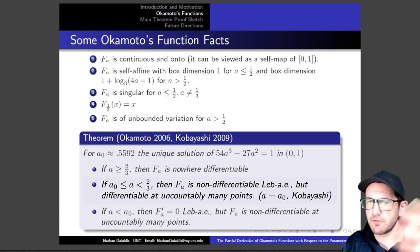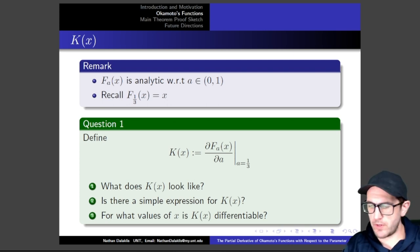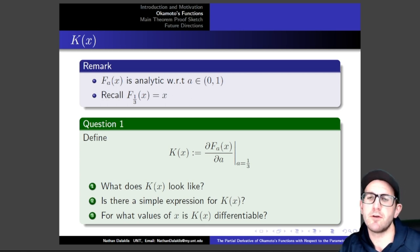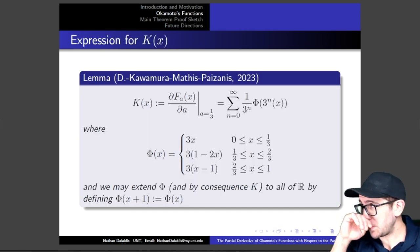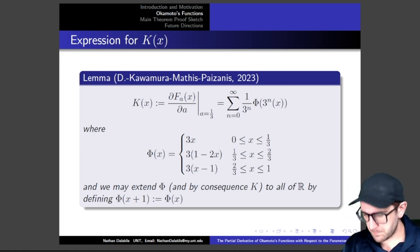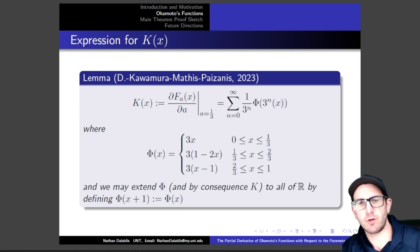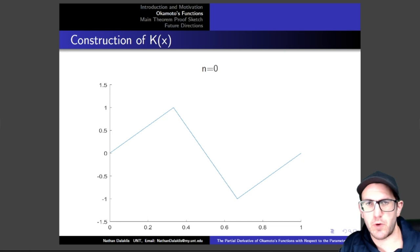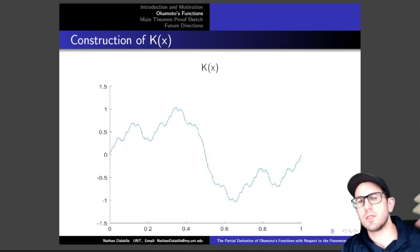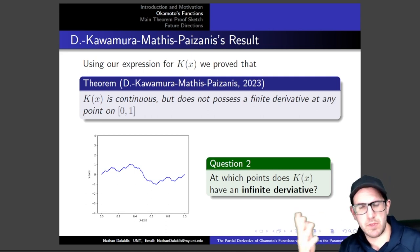We can make an analogous definition to what was happening with Lebesgue singular function at A equals one-half, and do that for A equals one-third. That's what we define this K(x) function to be. We had some questions: can we graph K(x)? Is there a simpler expression for K(x)? For what values is K(x) differentiable? We actually answered the simpler expression question first — we got an infinite sum representation in terms of essentially a ternary shift map expressed in terms of points in the unit interval, and extended that to the whole real line in a systematic way.